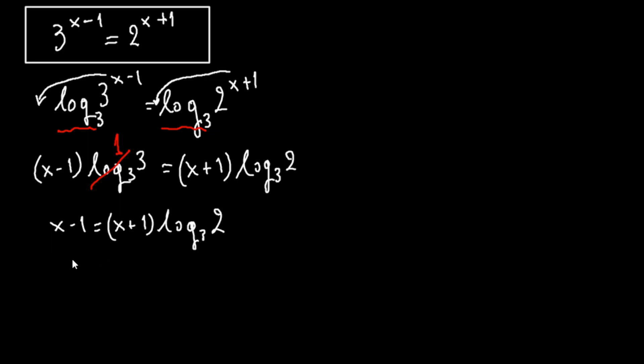If we move over we have x minus 1 equals to x times log 2 with base 3 plus log 2 with base 3.